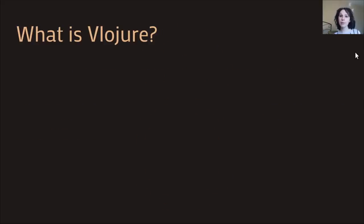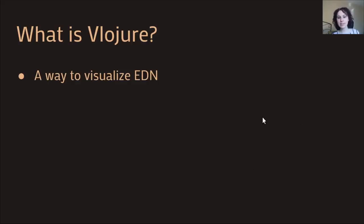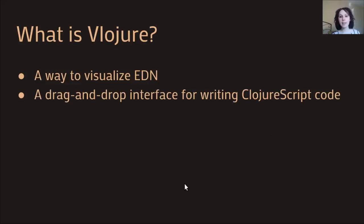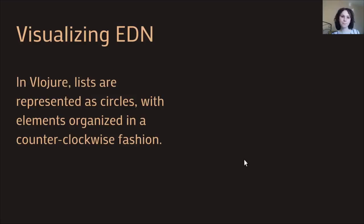The core feature of Vlojure is a new strategy for visualizing EDN expressions that relies on a nested circular structure rather than using text. In addition to this visualization tool, Vlojure also acts as a drag-and-drop tool for editing these visualized EDN expressions. Vlojure's basic strategy for visualizing EDN relies on treating lists as circles and the elements of those lists as smaller circles inside an enclosing circle.